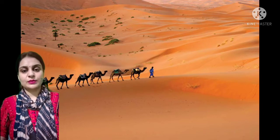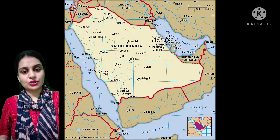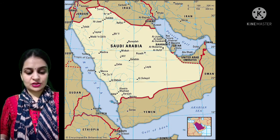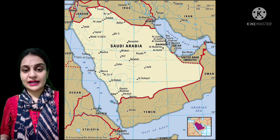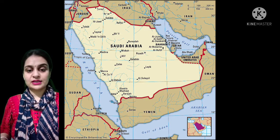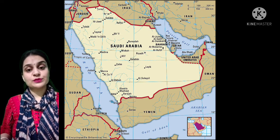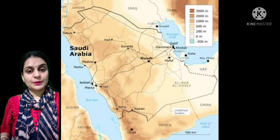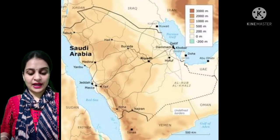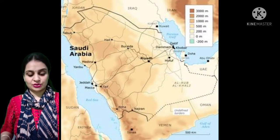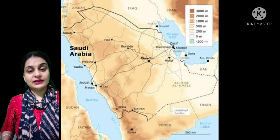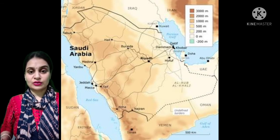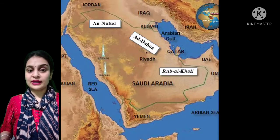First we will discuss the location of Saudi Arabia. Saudi Arabia lies in the southwest of Asia and it occupies most of the area of the Arabian Peninsula. It lies between the Persian Gulf and the Red Sea. The Tropic of Cancer passes through it. The countries that surround Saudi Arabia are Jordan,